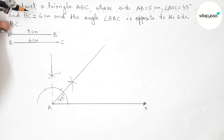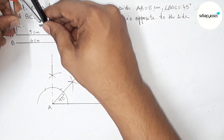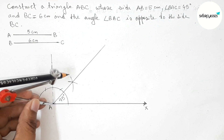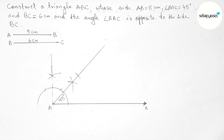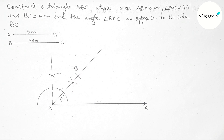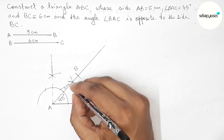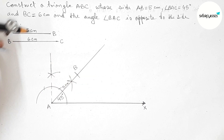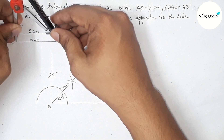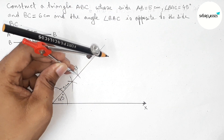Now taking the length AB which is 5 centimeter with the help of compass. Putting the compass on point A and cutting on the 45 degree ray, marking point B. So AB is 5 centimeter. Next taking the length BC that is 6 centimeter with the compass.